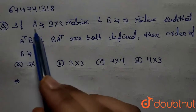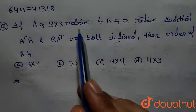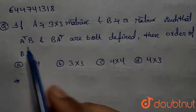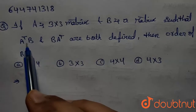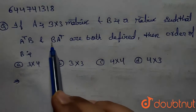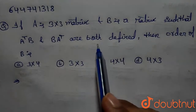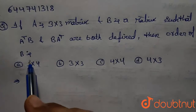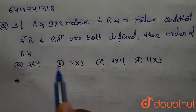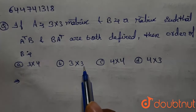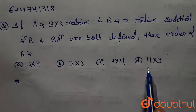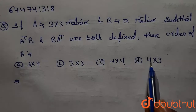The given question is: if A is a 3×3 matrix and B is a matrix such that A transpose B and B A transpose are both defined, then the order of B is — option A: 3×4, option B: 3×3, option C: 4×4, and option D: 4×3.